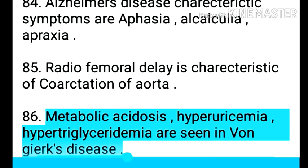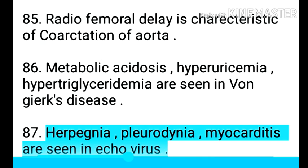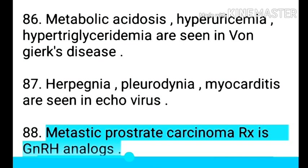Point 87: Metabolic acidosis, hyperuricemia, and hypertriglyceridemia are seen in von Gierke's disease. Point 88: Herpangina, pleurodynia, and myocarditis are seen in echovirus infection.